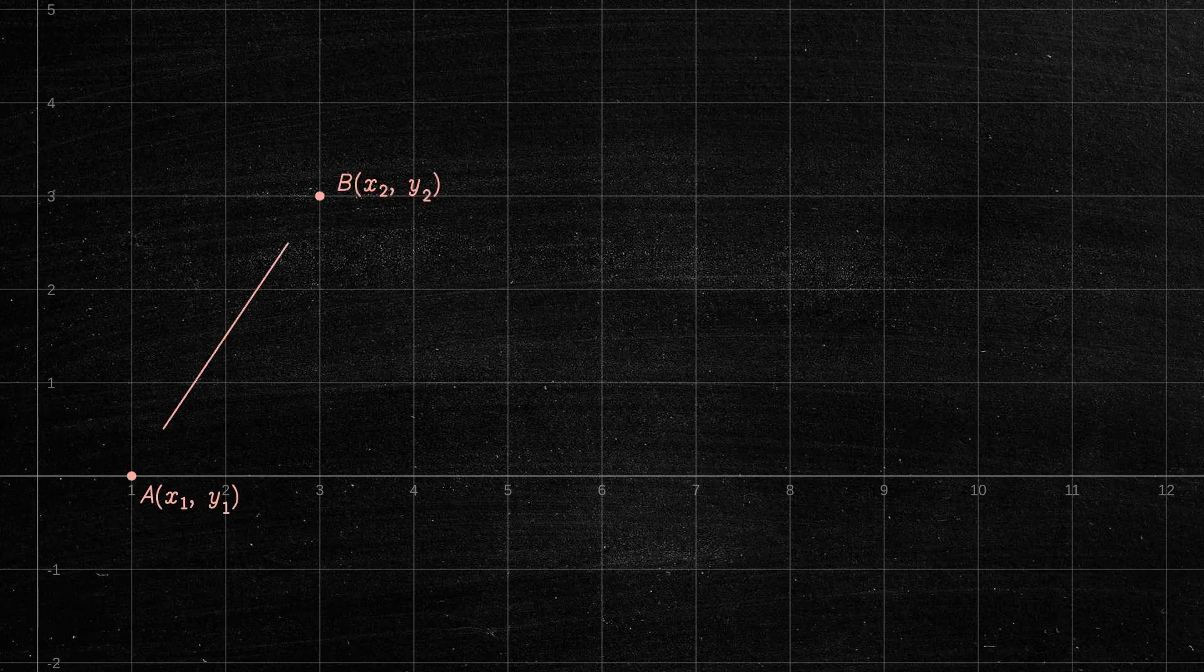Given two line segments, AB and CD, we want to find the point of intersection P, if it exists. Here is how to do it.